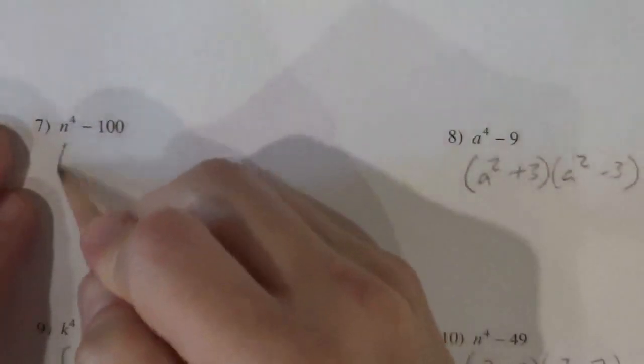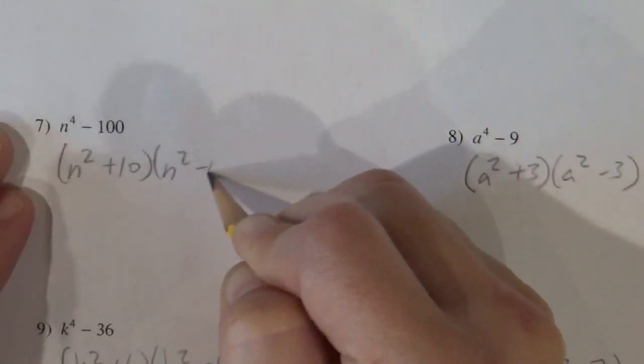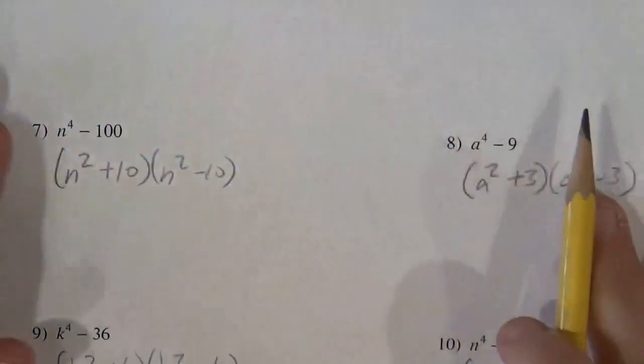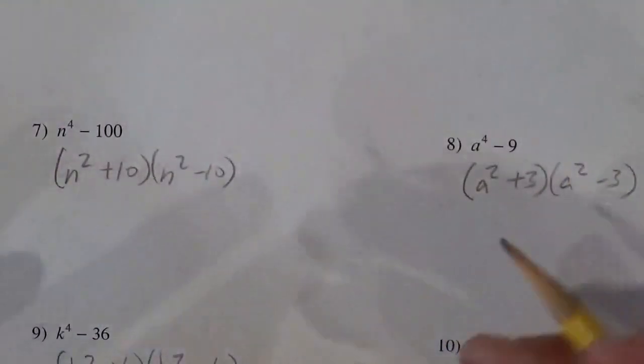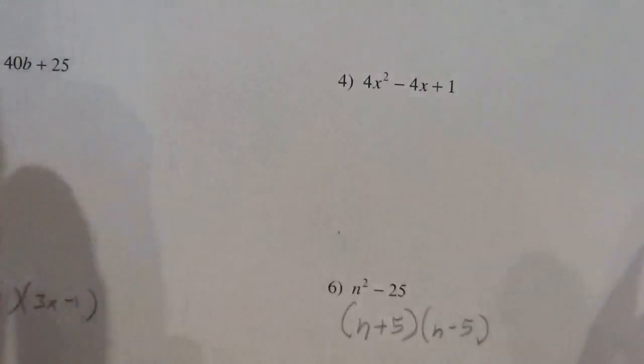And just to finish off all the two-term ones on here, that's n squared plus 10 and n squared minus 10. So by a bunch of quick examples, you get kind of the idea and you can do them fast. But let's go back to one of these and kind of show what's going on.